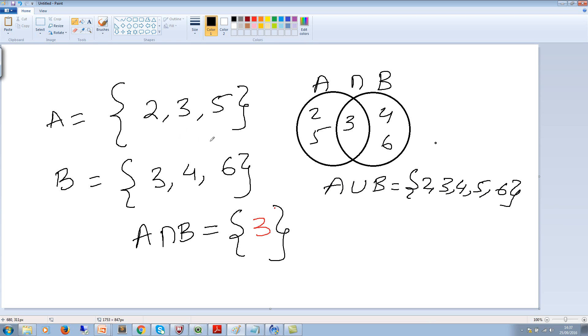So because 3 is the common value, as I said, it's all distinct values. So we are going to write 3 only once. We are not going to repeat the number 3 one more time. So we have 5 values in there. All the values, that is A union B.